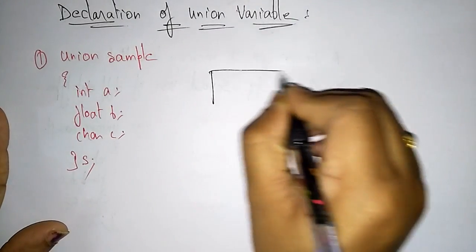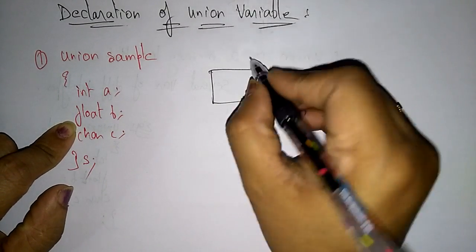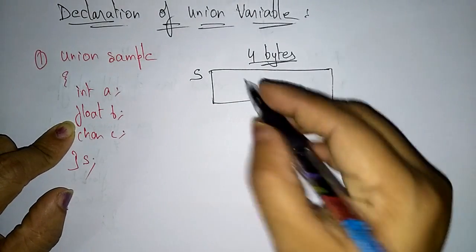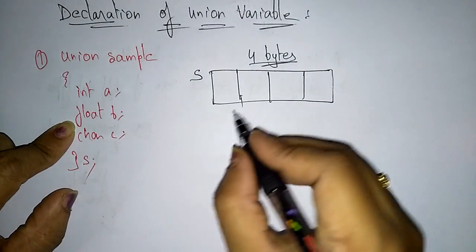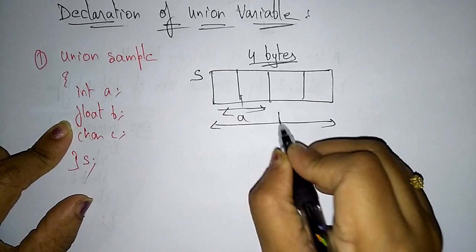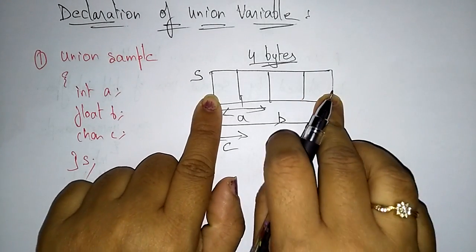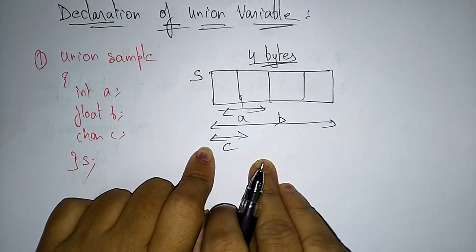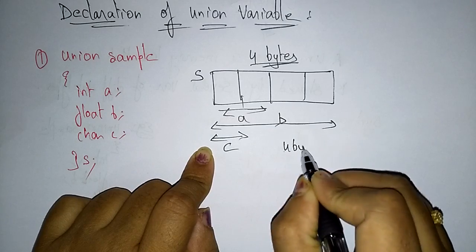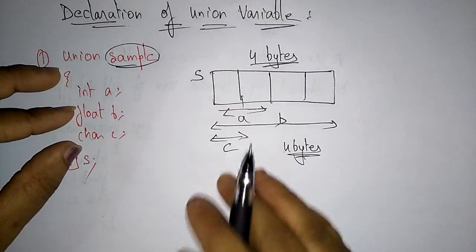So how is it stored in memory? The maximum size of the data type here is float, which has the maximum size, so you take the maximum size memory, that is four bytes. So the sample union s memory is four bytes. The first two bytes are occupied by the integer variable, four bytes by the float variable, and one byte by the character variable. So four bytes of memory is required for the sample union.